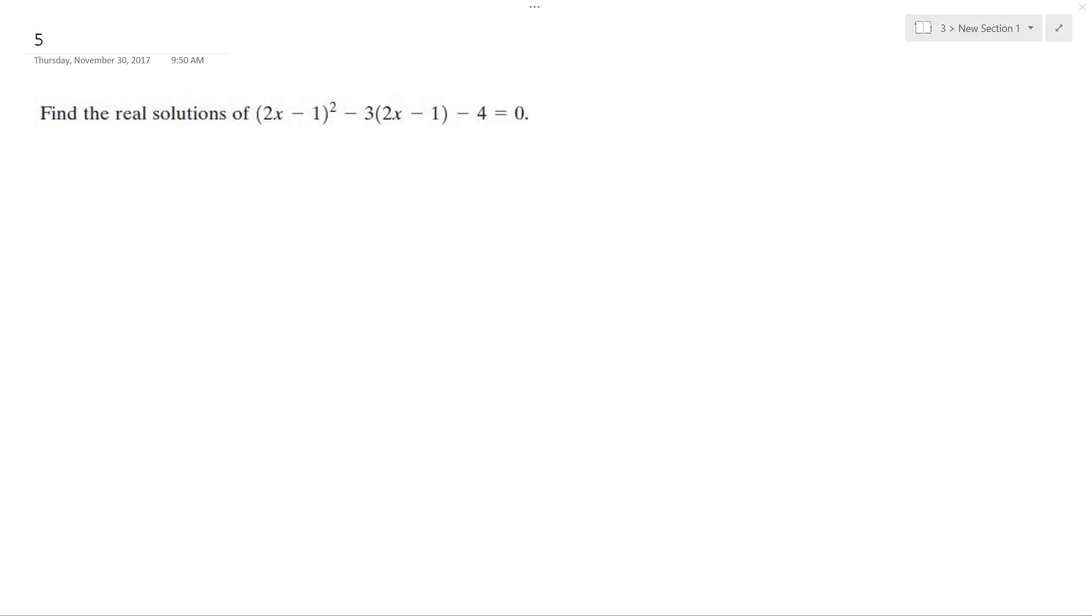So what we can do here is do a little trick called u-substitution, where we'll use u equals 2x minus 1, and then we'll substitute, so we'll have u squared minus 3u minus 4 equals 0.